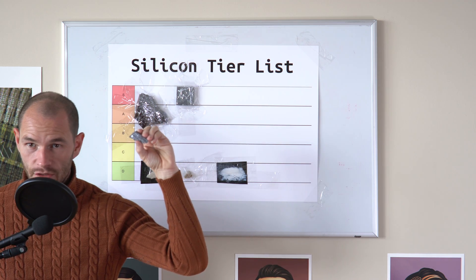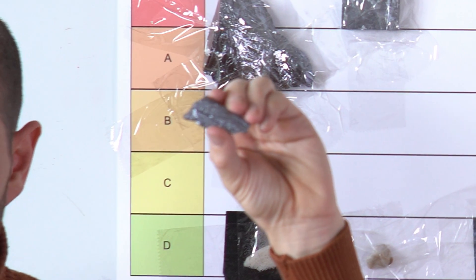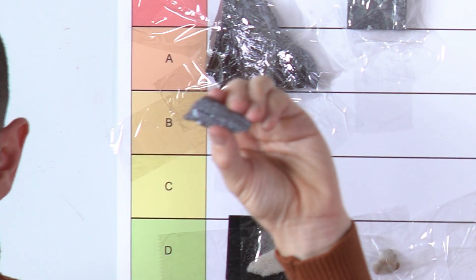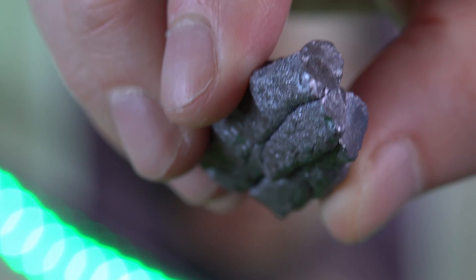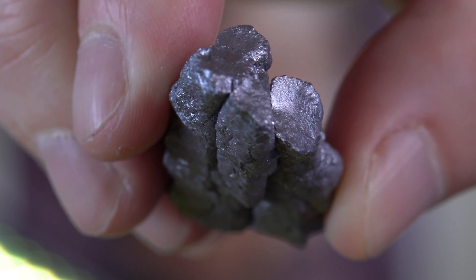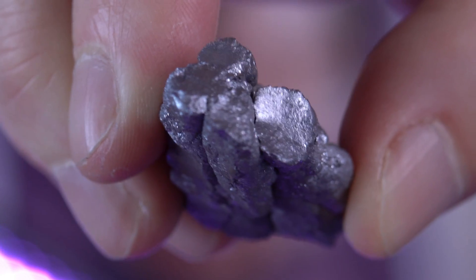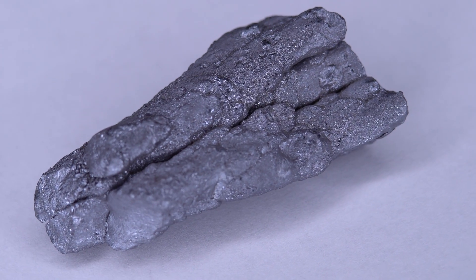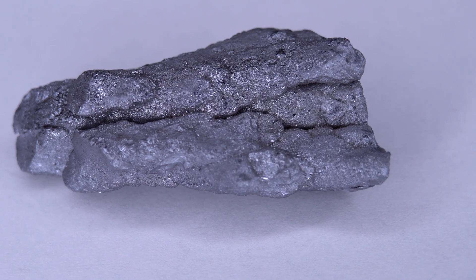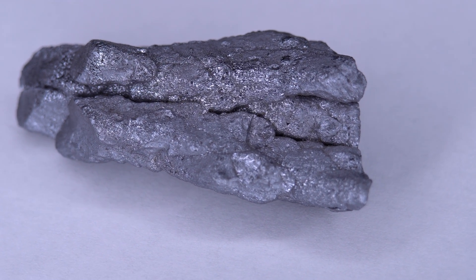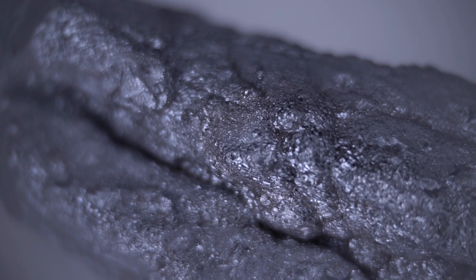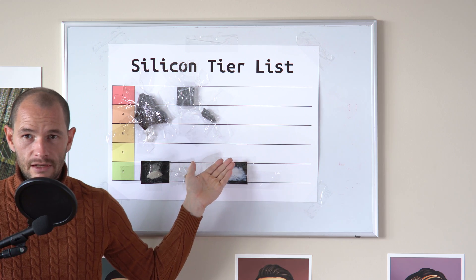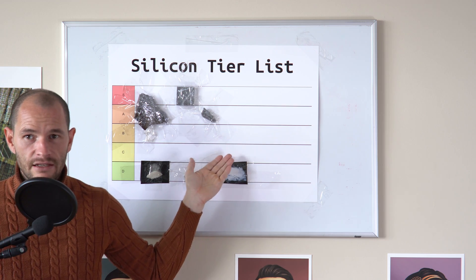Next, we have dendritic silicon. This is a piece of silicon that forms dendrites, which is a tree-like branching structure that crystals sometimes form into, just like how snowflakes do. Dendritic silicon forms under very specific temperature and mixing conditions. This type of silicon looks pretty cool, but not as cool as etched silicon. For this reason, I'll put it in the A tier.